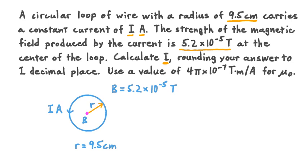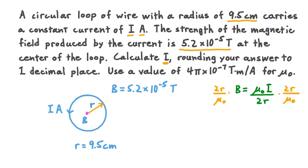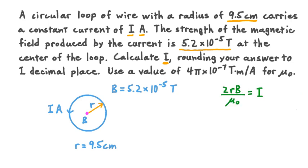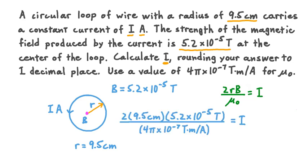We want to calculate the current magnitude I. Recalling that B equals mu-naught times I divided by 2 times r, we are given mu-naught, R, and B, and want to solve for I. If we multiply both sides by 2R divided by mu-naught, the factors of 2, R, and mu-naught on the right-hand side cancel, leaving just current I. So I equals 2 times R times B over mu-naught. Substituting in the given values for B, R, and mu-naught gives us this expression.